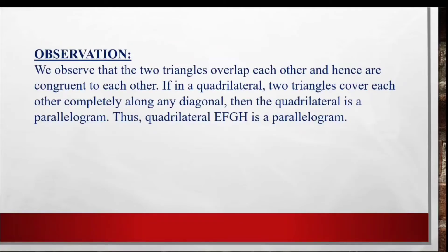So the observation is that we observe that the two triangles overlap each other and hence they are congruent to each other. If in a quadrilateral two triangles cover each other completely along any diagonal, then the quadrilateral is a parallelogram. We already know about this. Thus the quadrilateral E, F, G, H is a parallelogram.